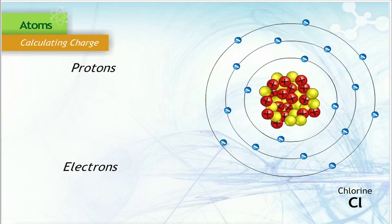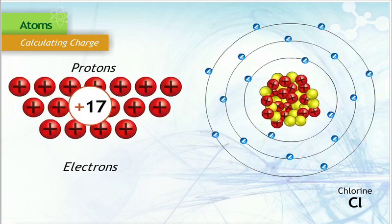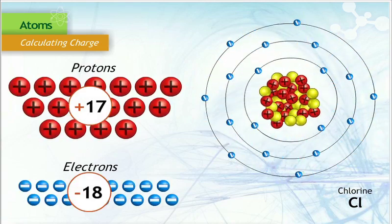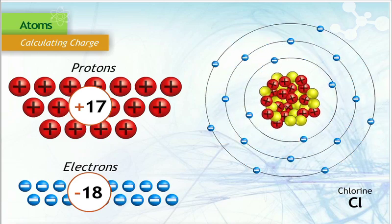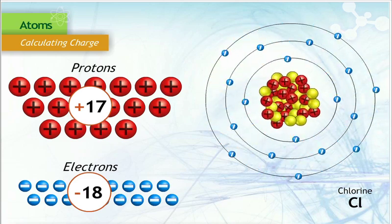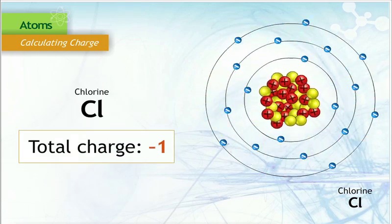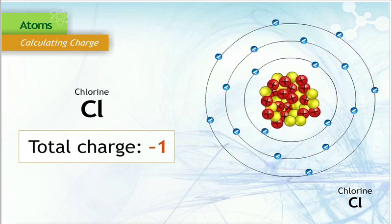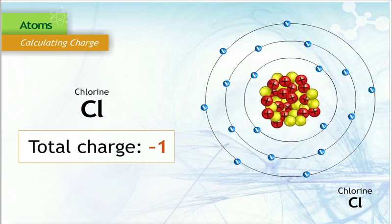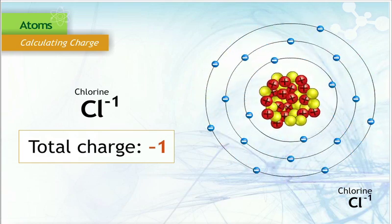For example, if a chlorine atom has 17 protons and 18 electrons, there are 17 positive charges and 18 negative charges. Adding the 2 results in a charge of negative 1. The negative 1 would be expressed as a superscript of the atom.